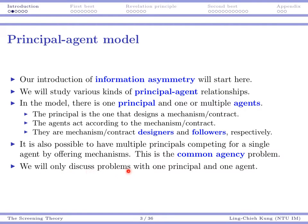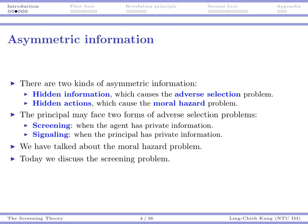We will only focus on problems with one principal and one agent. There are two kinds of asymmetric information: the hidden thing may be either information or actions. If the hidden part is a piece of information, we say there is an adverse selection problem; if it is actions, then there is a moral hazard problem. Here is a quick review of the difference between information and actions.